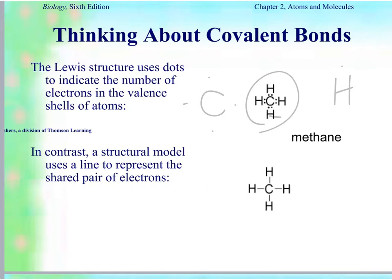That's called a Lewis dot structure. A structural model is the one where you have a line between atoms — instead of two dots representing the shared pair of electrons, they draw a line between C and H. Sometimes in diagrams they don't even write the line and just write CH, where the bond is implied.